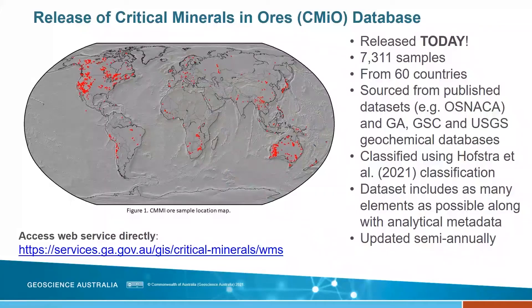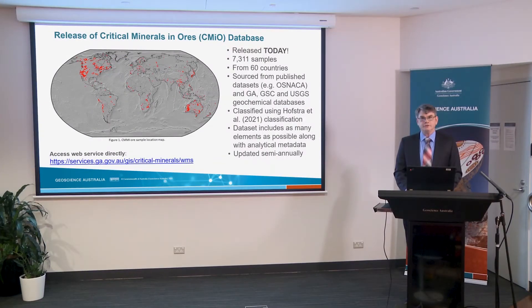We'll now move on to the Critical Minerals in Ores database — the CMIO database — released today. We have over 7,000 samples from over 60 countries, sourced from published datasets including OSNACA and the Geoscience Australia, GSC, and USGS geochemical databases. All samples have been classified according to the Hofstra et al. classification scheme. The data includes as many elements as possible along with analytical metadata — more than two-thirds of the periodic table — and it's going to be updated semi-annually.